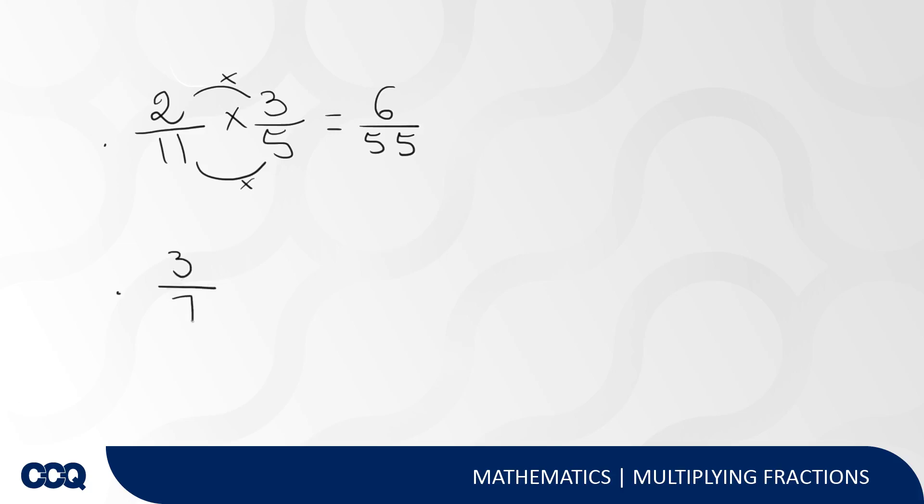You have 3 over 7 times 2 over 5. We will also do the same thing, which is gonna give you 6 over 35. Now in case you have a whole number, let's say you have 2 times 3 over 5.